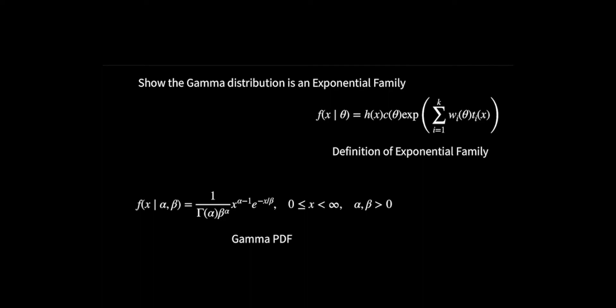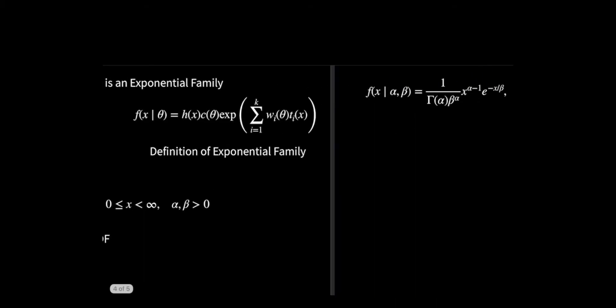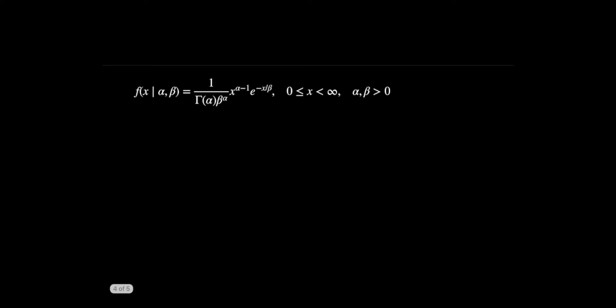Now that we know the definition, let's try an example. We're going to show that the gamma distribution is a member of the exponential family. If we look here, this is the PDF for the gamma distribution. The X is allowed to range from 0 to infinity and the two parameters alpha and beta must be positive.